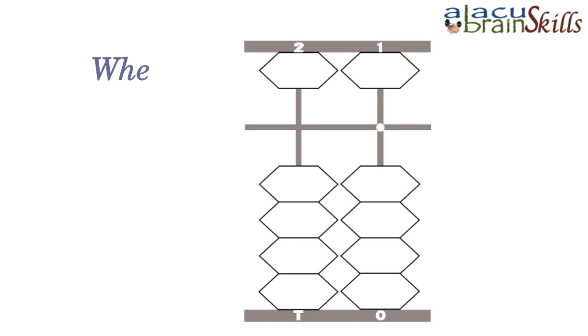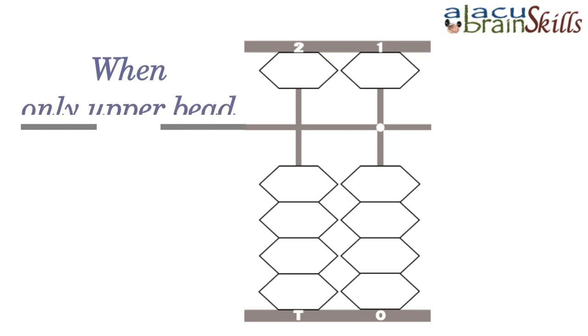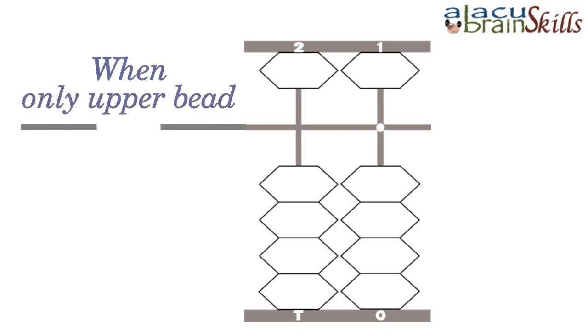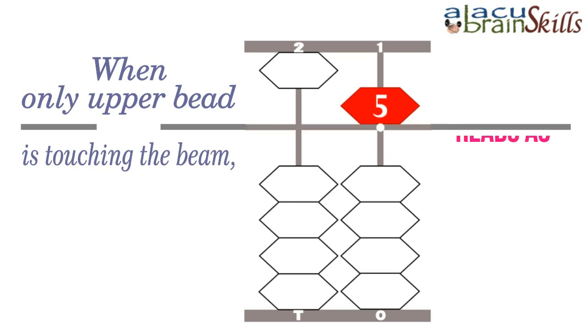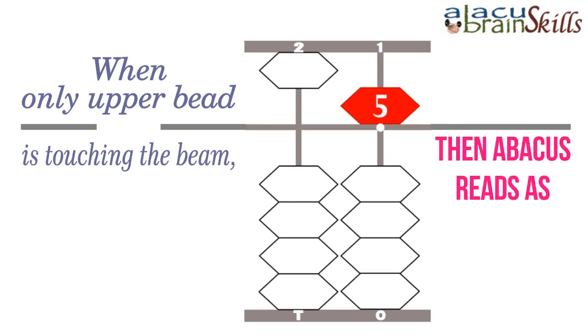When only the upper bead is touching the beam, then the Abacus reads as 5.